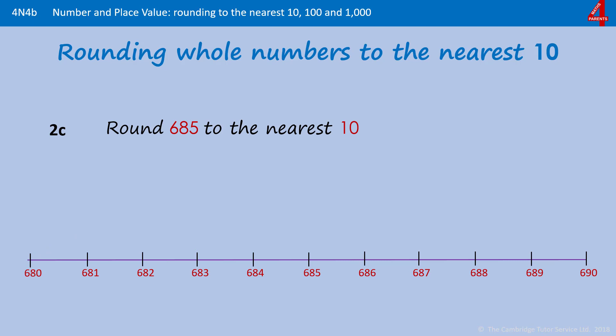Round 685 to the nearest 10. There's 685. The multiples of 10 either side are 680 and 690. 685 is an equal distance from both, but remember the rule: if we're rounding a whole number to the nearest 10 and there's a 5 in the ones, we round up. So 685 rounded to the nearest 10 is 690.